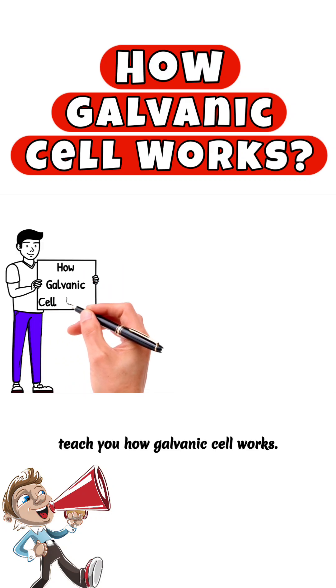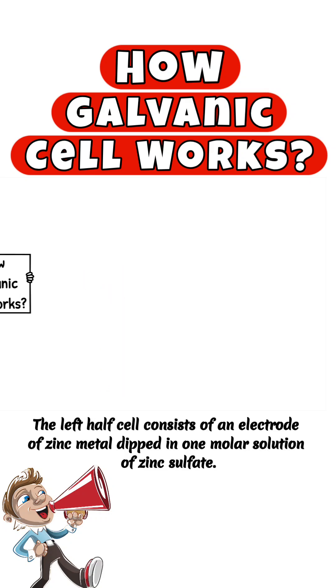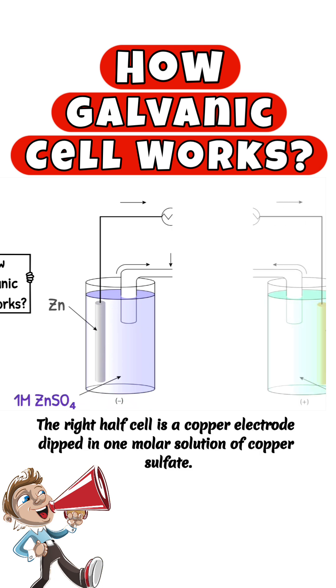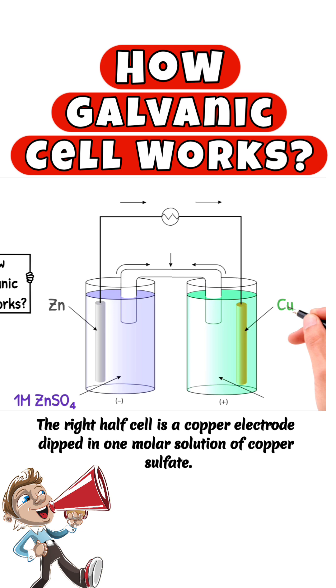I'll teach you how galvanic cell works. The left half cell consists of an electrode of zinc metal dipped in one molar solution of zinc sulfate. The right half cell is a copper electrode dipped in one molar solution of copper sulfate.